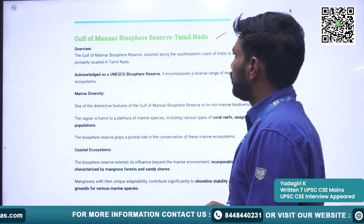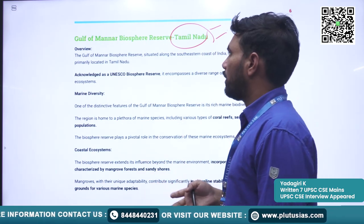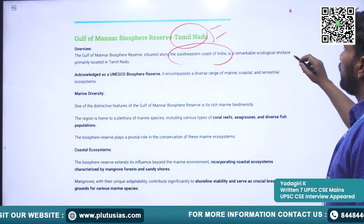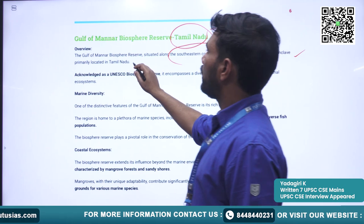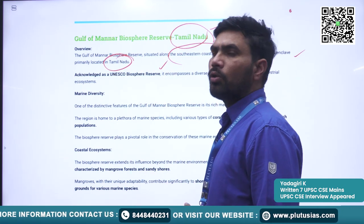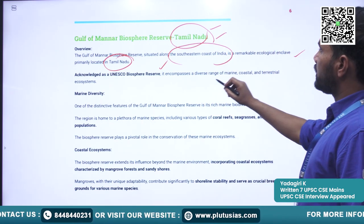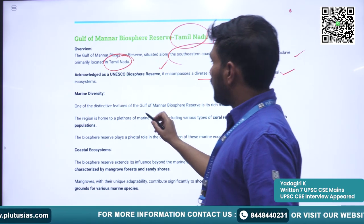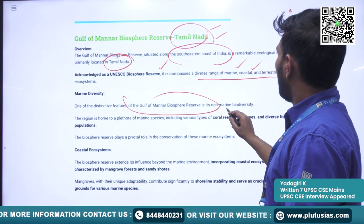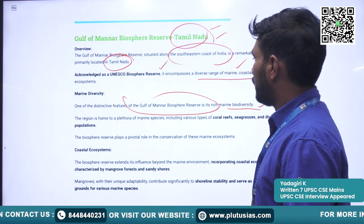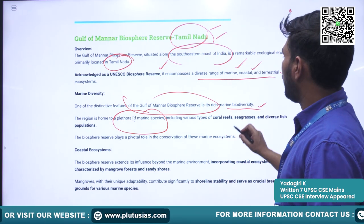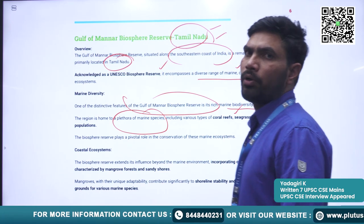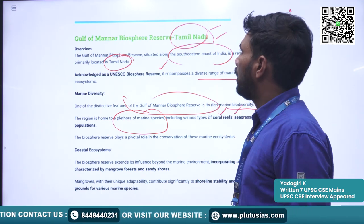Next is Gulf of Mannar Biosphere Reserve. It is located at the coastal region of Tamil Nadu, along the southern coast of India. It is a remarkable ecological enclave, acknowledged as a UNESCO Biosphere Reserve. It encompasses a diverse range of marine, coastal, and terrestrial ecosystems. The distinctive feature of the Gulf of Mannar is its rich marine biodiversity, holding a plethora of marine species including coral reefs, seagrasses, and diverse fish populations.